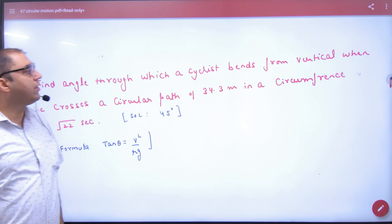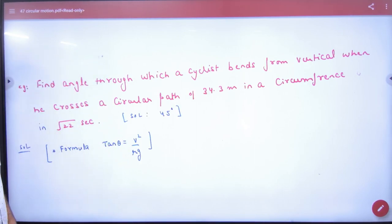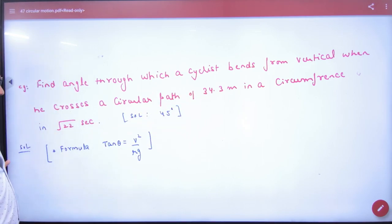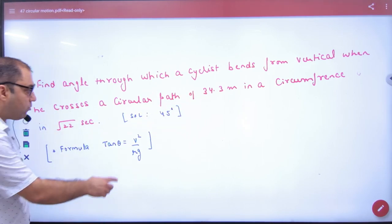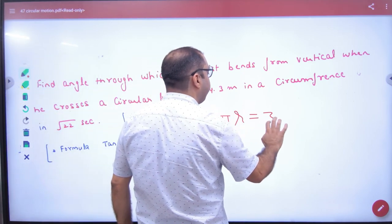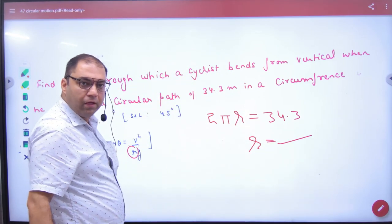Next, angle through which a cyclist bends. Bending of cyclist, how much bend will it be? Theta is to find. And whose circular path circumference given is given. Now, tan theta equals v square by Rg. What should you say? Radius. Circumference is what? 2 pi r equals 34.3. What will be solved first? Radius.